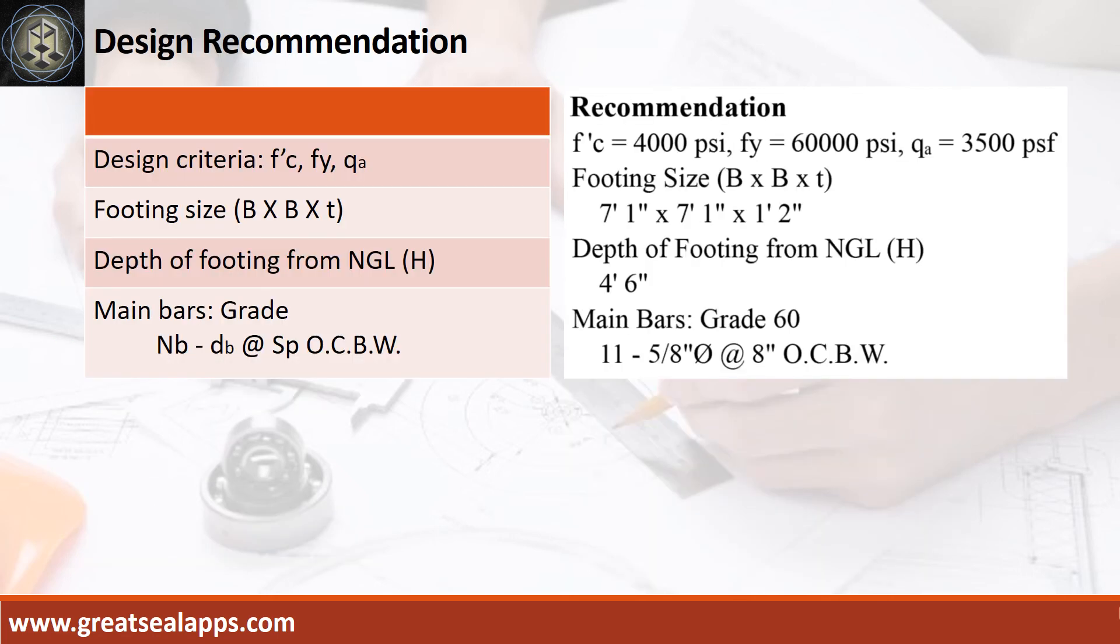Design recommendation as follows: f'c equals 4,000 PSI, fy equals 60,000 PSI, qa equals 3,500 PSF. Footing size is 7 feet 1 inch by 7 feet 1 inch by 14 inches. Depth of footing from natural grade line 4 feet 6 inches. Main bars of grade 60, 11 pieces 5/8 inch diameter bar at 8 inches on center both ways.